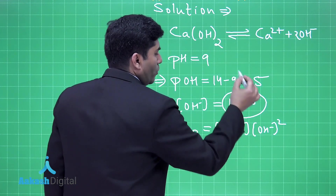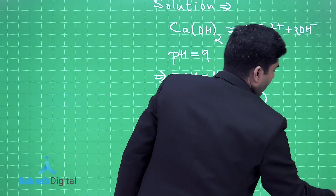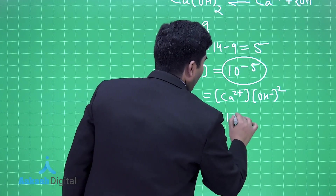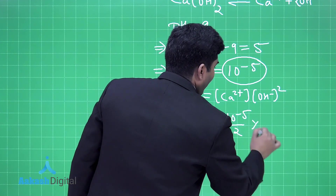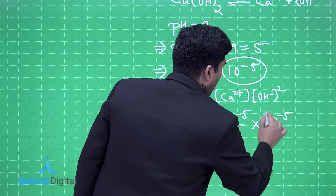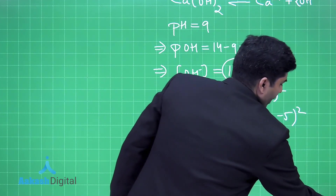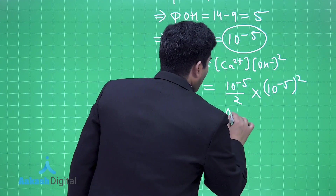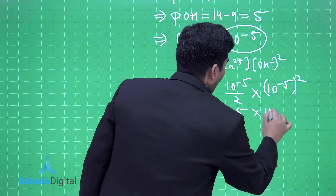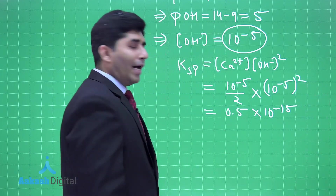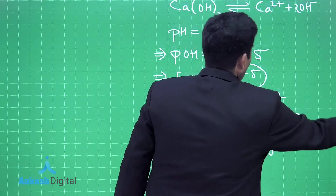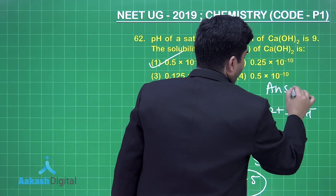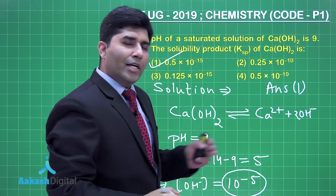Since [OH⁻] is 10⁻⁵, the concentration of Ca²⁺ will be 10⁻⁵ divided by 2. Substituting into the KSP expression: KSP = (10⁻⁵/2) × (10⁻⁵)², which gives 0.5 × 10⁻¹⁵. This matches option number 1, so the answer is option number 1.